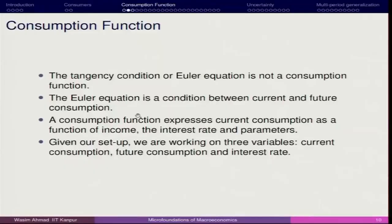But that will not be regarded as a macro indicator — the Euler equation cannot become the consumption function. For the consumption function we derived this particular expression. We defined the consumption function with respect to c, as a function of yt, yt+1, and rt. This means that consumption depends upon current income, future income, and the rate of interest.